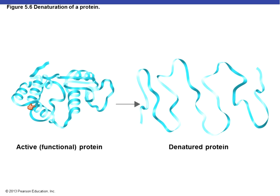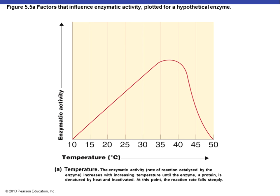Here we have a functional protein with alpha helices and beta sheets making a three-dimensional molecule, and next to it the same enzyme denatured — it's lost its form. If this is supposed to be the active site, we can't figure out where it is anymore. There's no appropriate place for the substrate to bind, so the enzyme can't do its job of lowering activation energy. If the enzyme loses its form it loses its function, and changes in temperature and pH allow that to happen.